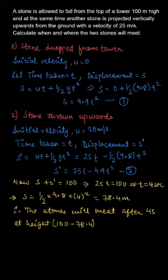So, we can conclude that the stones will meet after 4 seconds and at a height of 21.6 meters from the ground. This 21.6 can be obtained by subtracting 78.4 from the tower height: 100 minus 78.4 equals 21.6 meters from the ground level. Thank you.